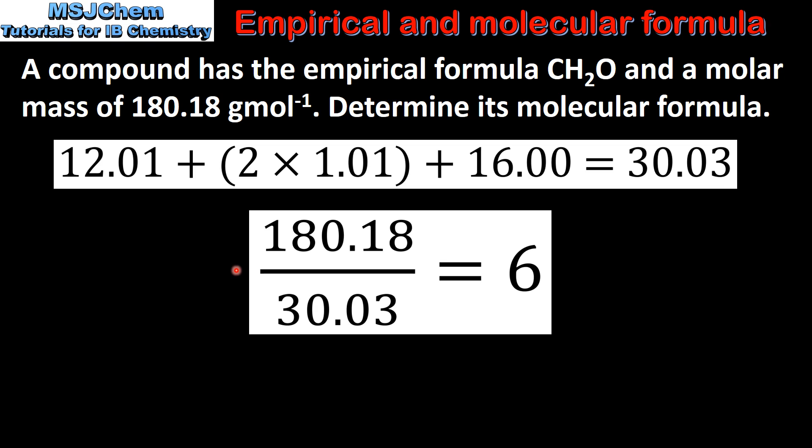The next step is to divide the molar mass of the compound by the sum of the relative atomic masses of the atoms in the empirical formula. So that's 180.18 divided by 30.03 which gives us 6.